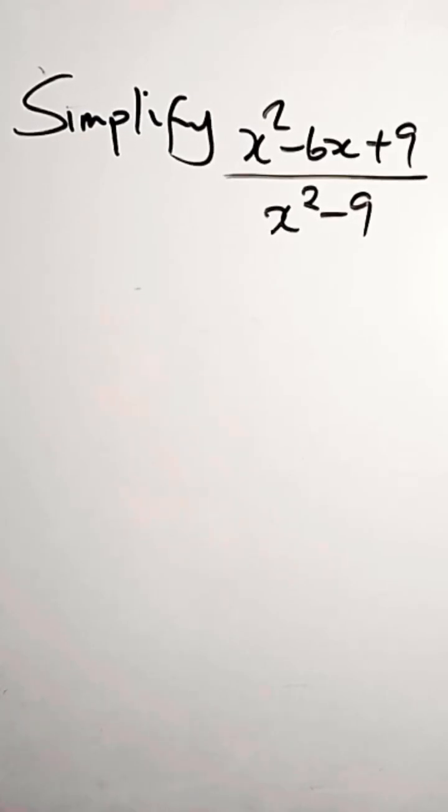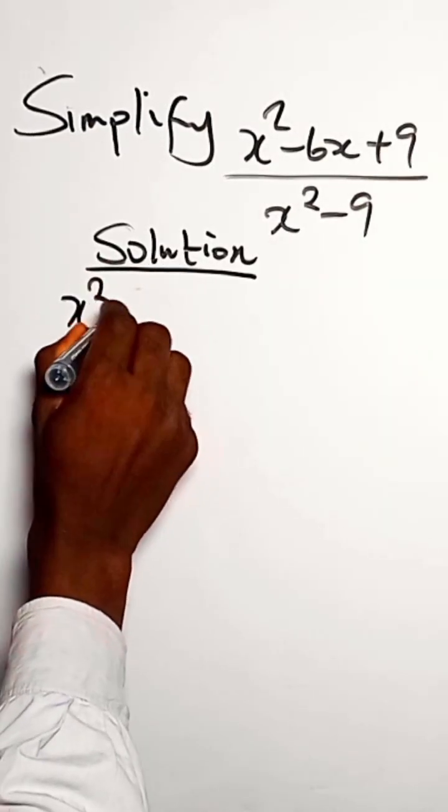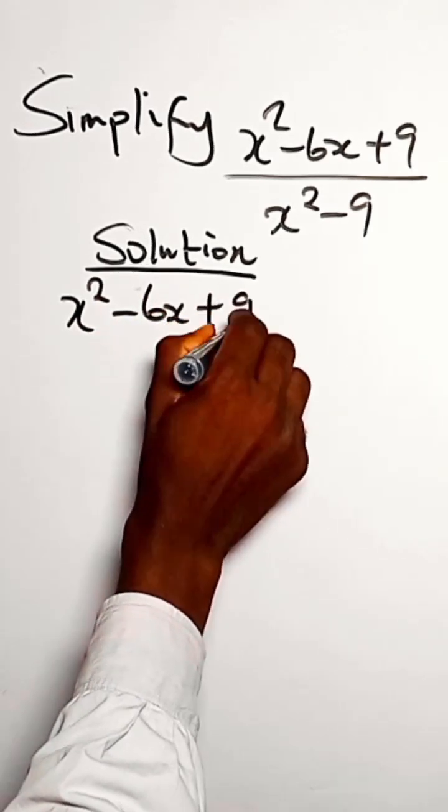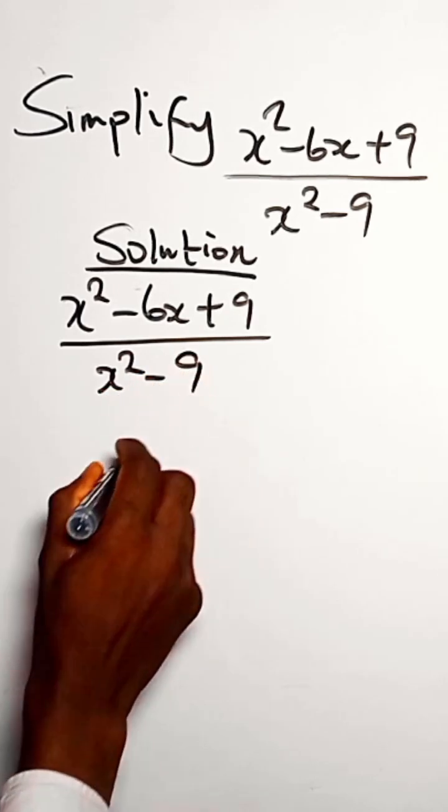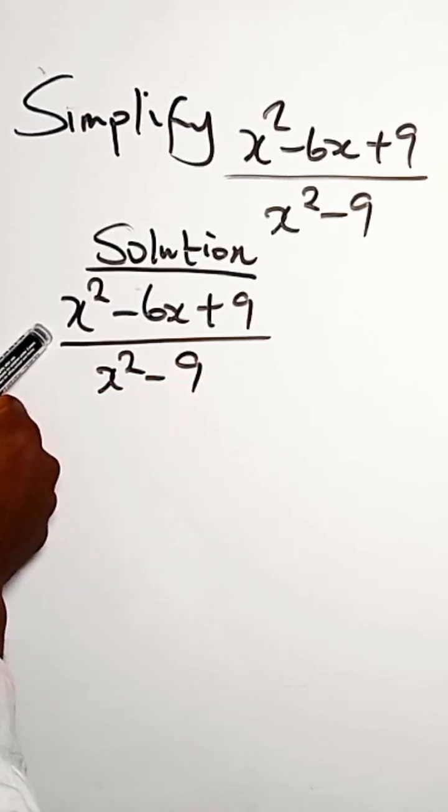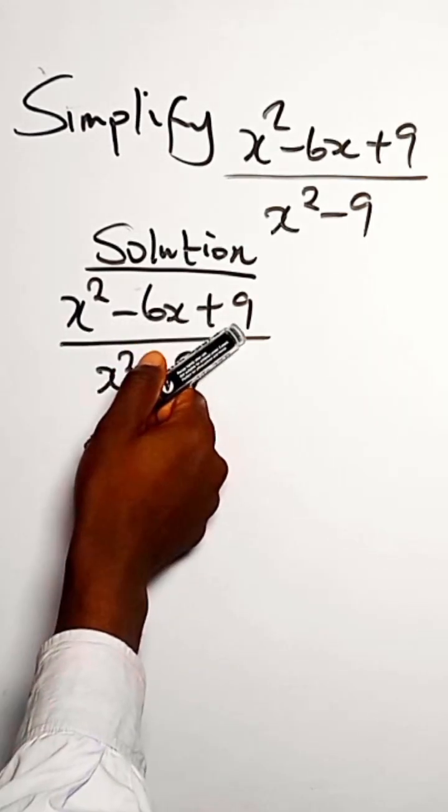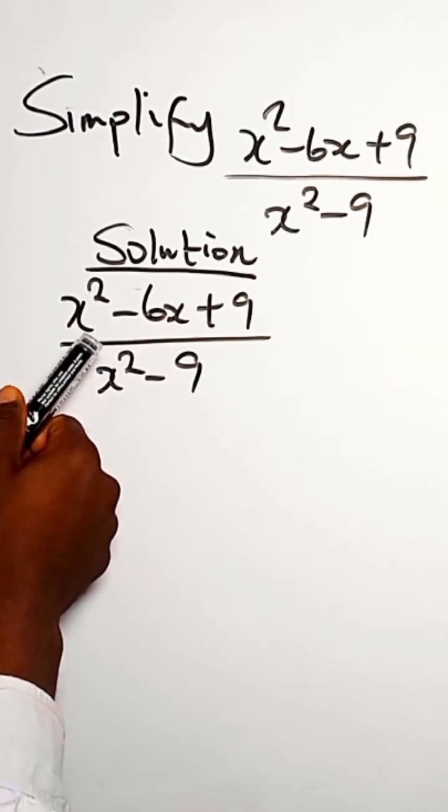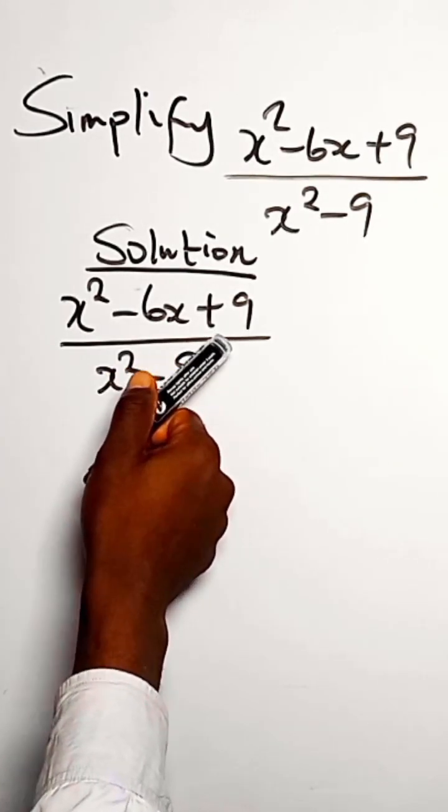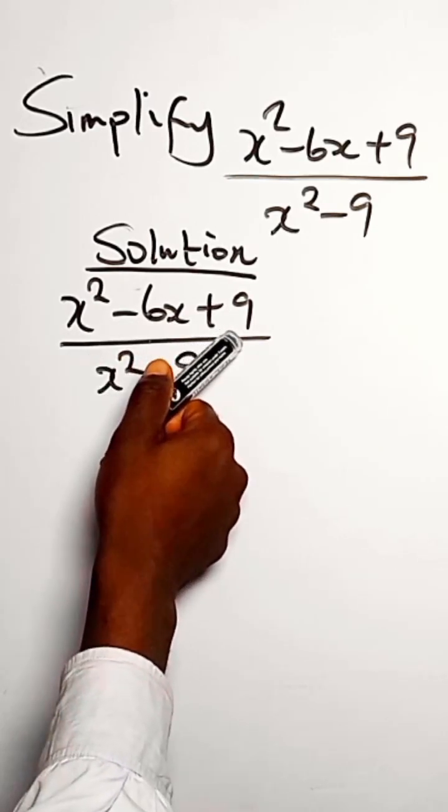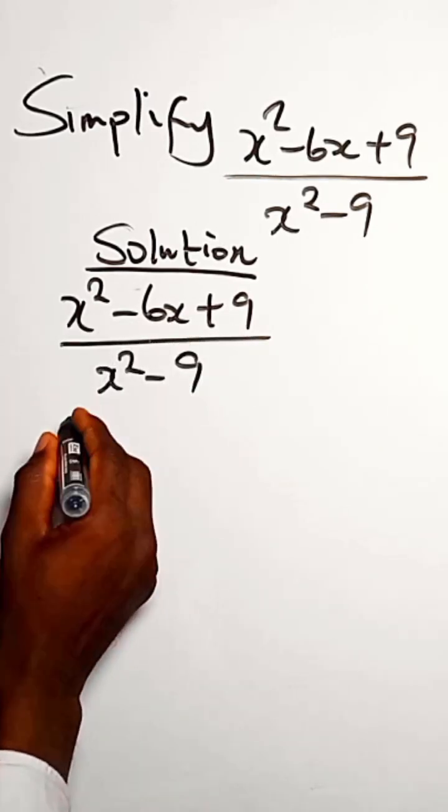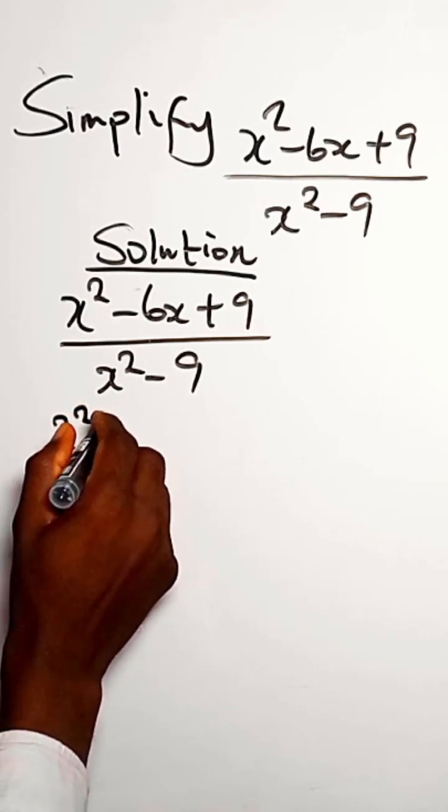Simplify this rational expression: x² - 6x + 9 divided by x² - 9. So we look at the numerator. We can factorize this, so we look for the product of two factors and the sum of the same factors that will give us this.